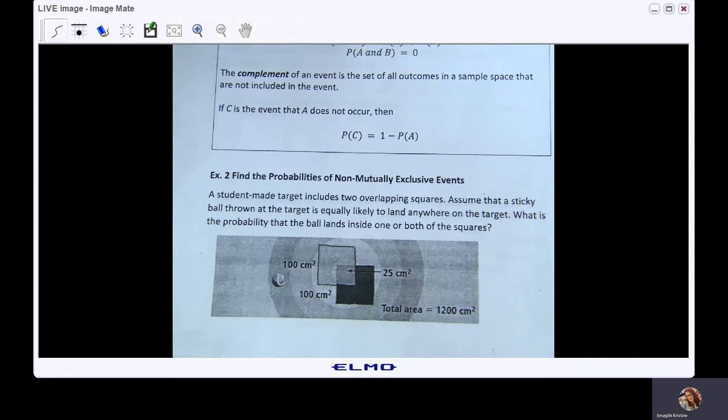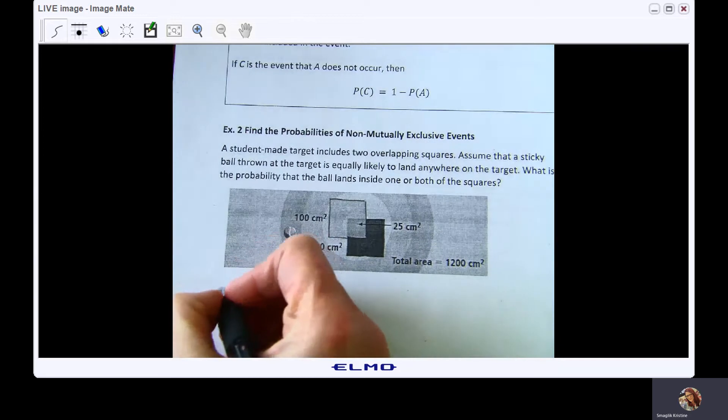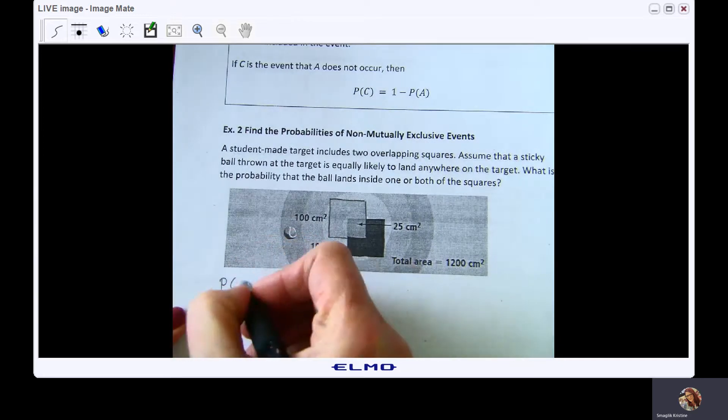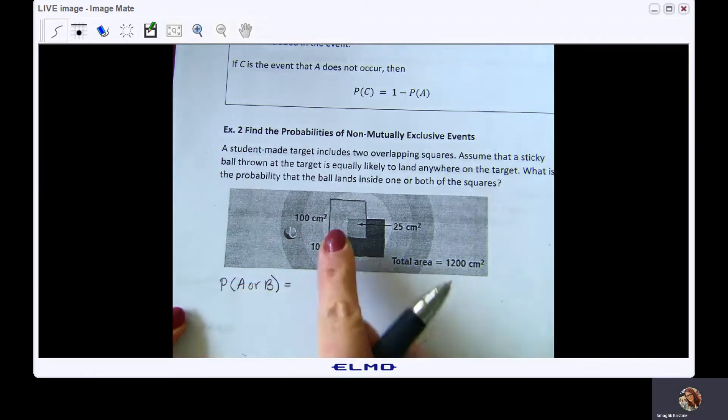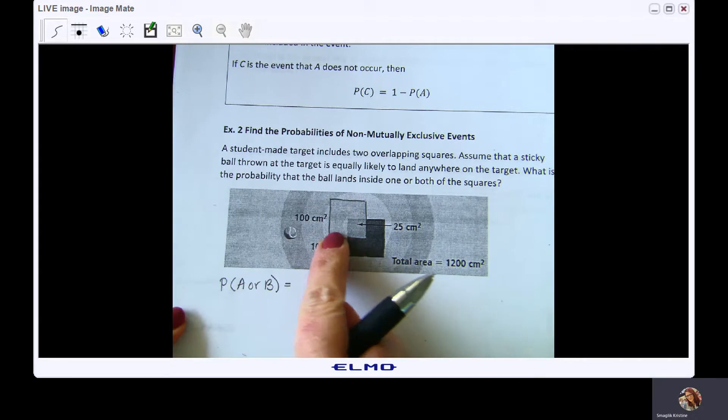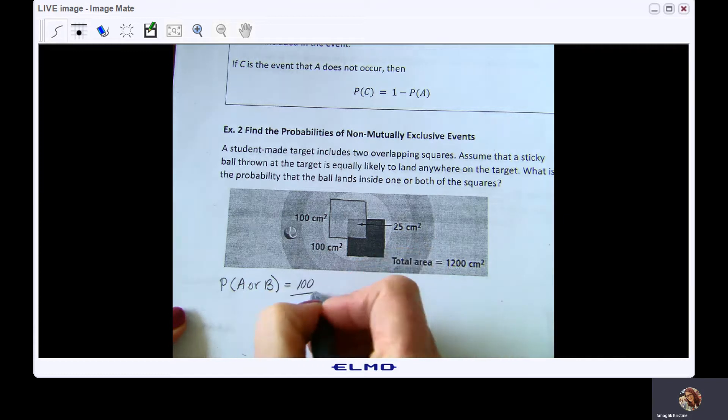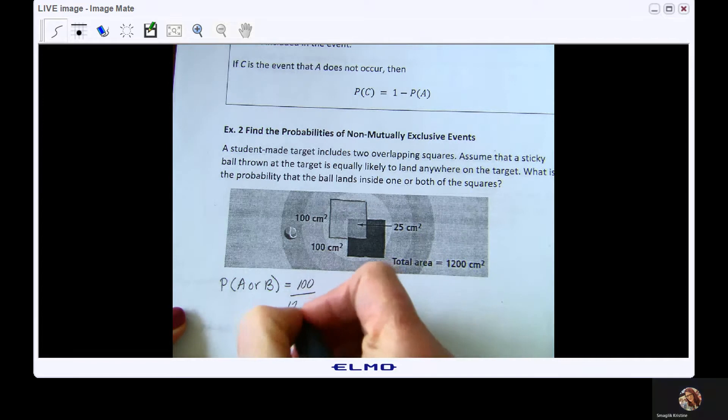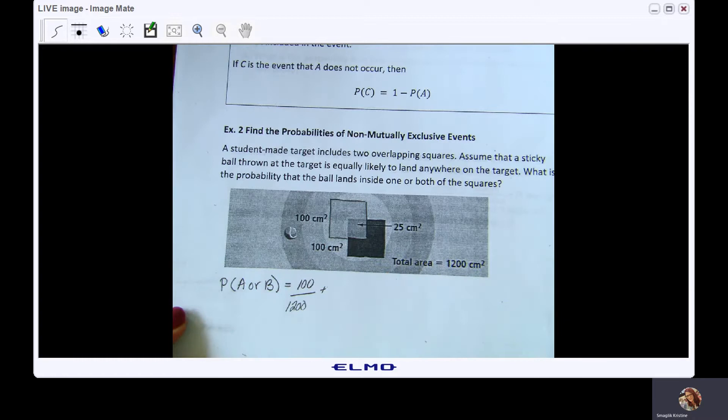So now let's go ahead and look at calculating that probability. So we're going to have the probability of event A and event B, A or B. So maybe we'll say event A is that the ball lands in this square. So I have 100 centimeters squared here, 100 total area 1200. Plus, for the or statement we're going to add.